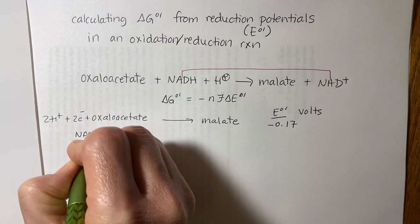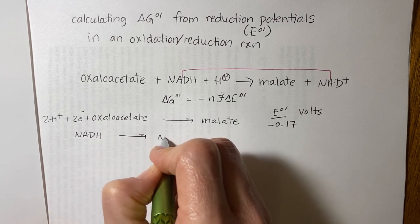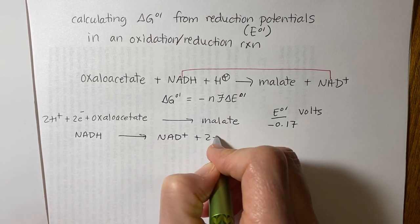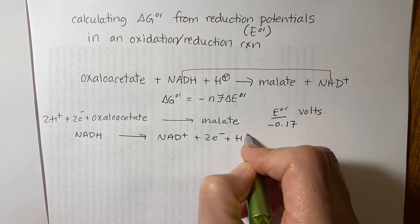NADH goes to NAD plus, plus two electrons, plus a hydrogen ion.